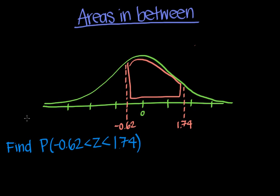Well, this isn't too hard to find. All we have to do is find the probability of the entire area of the normal distribution up to 1.74, and then subtract the area up to negative 0.62.